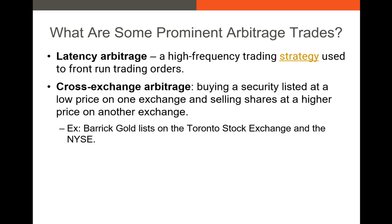Similar to latency arbitrage is cross-exchange arbitrage, where you find securities listed on multiple exchanges and buy at the lower price on one exchange while selling at the higher price on another. An example is Barrick Gold, which lists on both the Toronto Stock Exchange and the New York Stock Exchange. If the share prices differ between exchanges, you can take a long position in the lower-valued shares and short the other, waiting for a reversion to a comparable price.